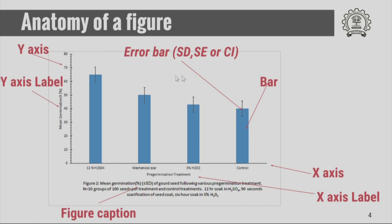This is another example of a figure where a particular data set has been shown using a bar chart. You find different categories on the x axis and the percentage is shown on the y axis. The labels for x axis and y axis are present, figure captions are given at the bottom, and error bars for the measurements have also been shown. Error bars can represent standard deviation, standard error, or confidence interval.